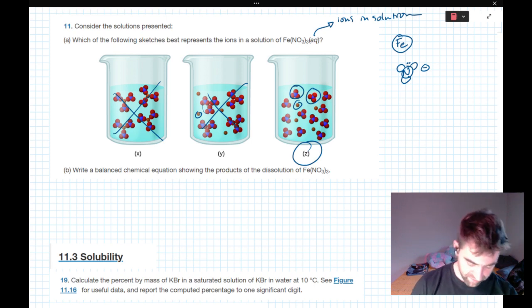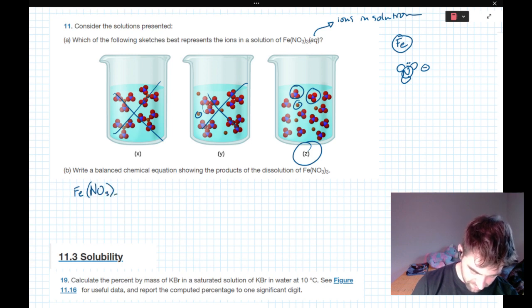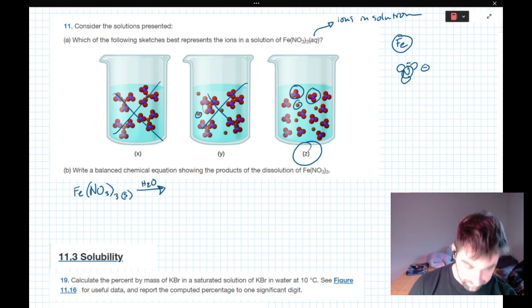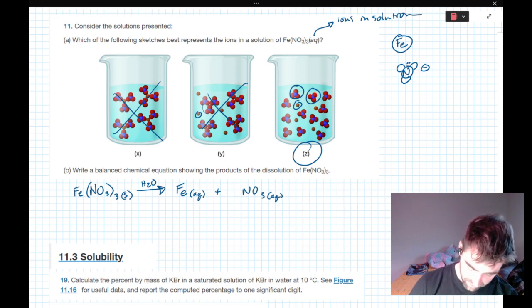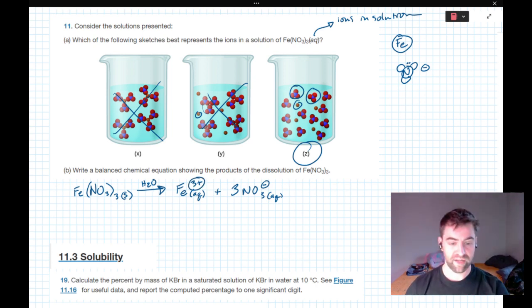So writing a balanced equation for this, we started with what would originally have been solid iron nitrate. We add it to water. We end up with iron by itself in aqueous solution and nitrates by themselves in aqueous solution. Nitrates we know have a negative one charge. There's three of them for every mole of iron. And so our iron had a positive three charge associated with it.